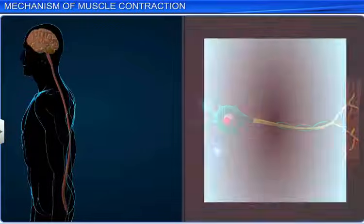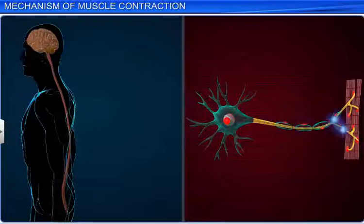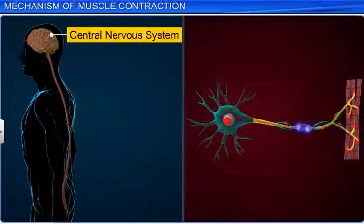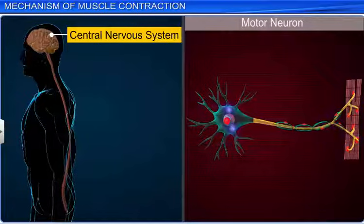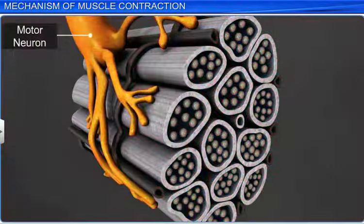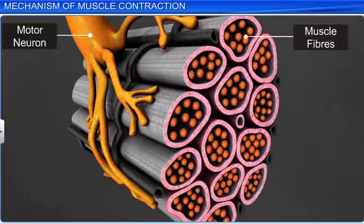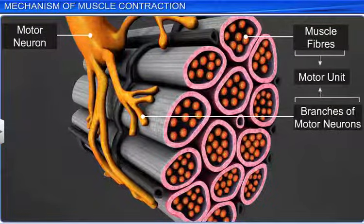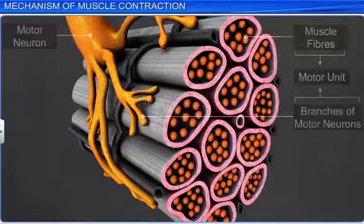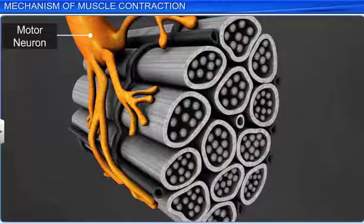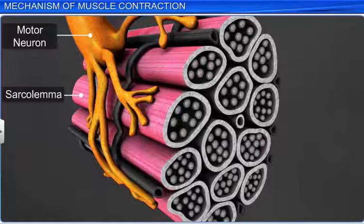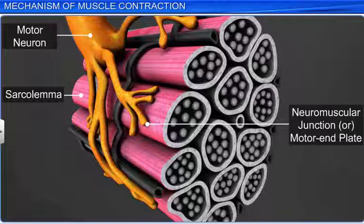To start a muscle contraction, the central nervous system or CNS sends a signal via a motor neuron. The motor neurons along with the connected muscle fibers form a motor unit. The junction between a motor neuron and the sarcolemma of the muscle fiber is called the neuromuscular junction or motor end plate.